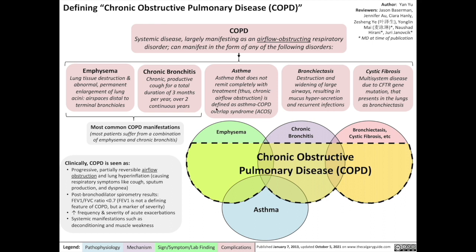Out of these five different conditions, emphysema and chronic bronchitis are the two most common COPD manifestations, and most patients suffer from a combination of emphysema and chronic bronchitis.